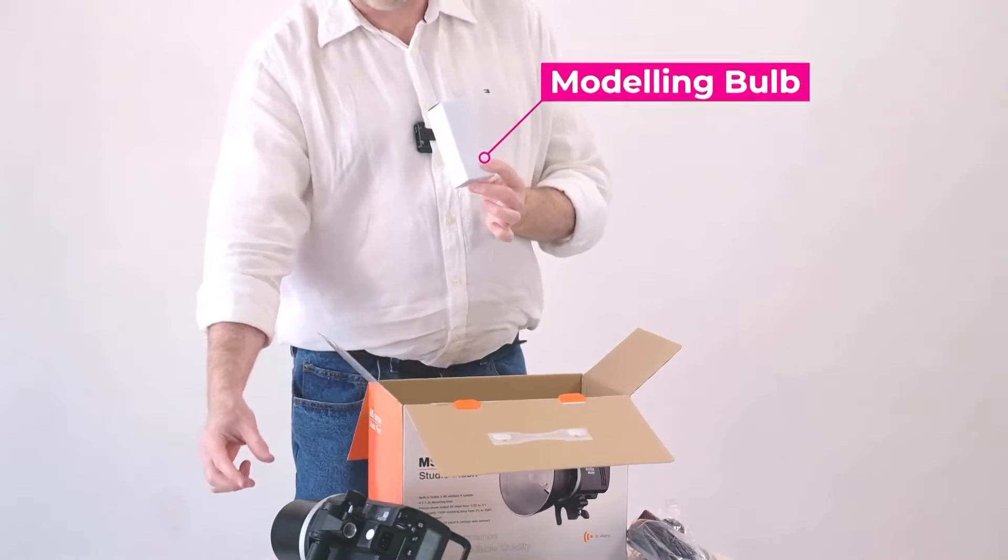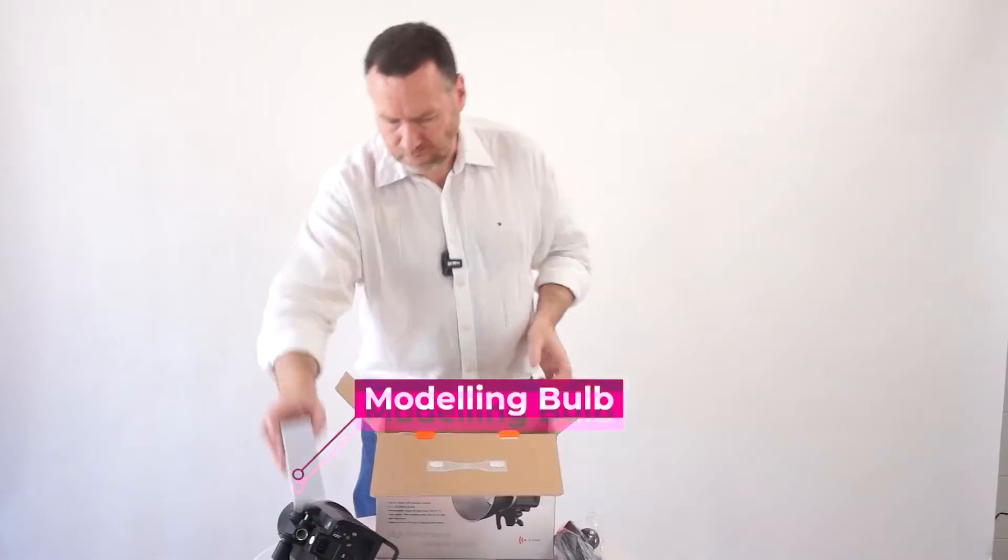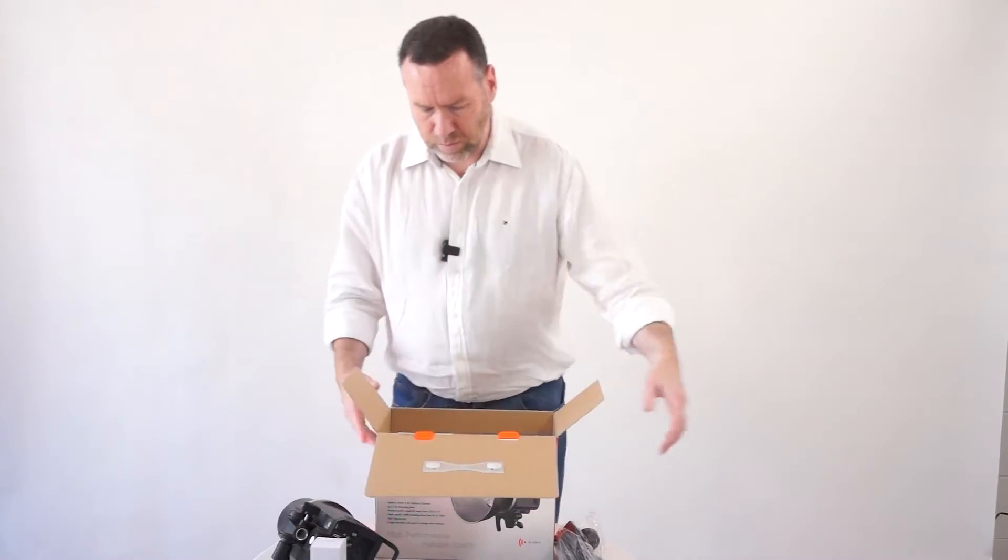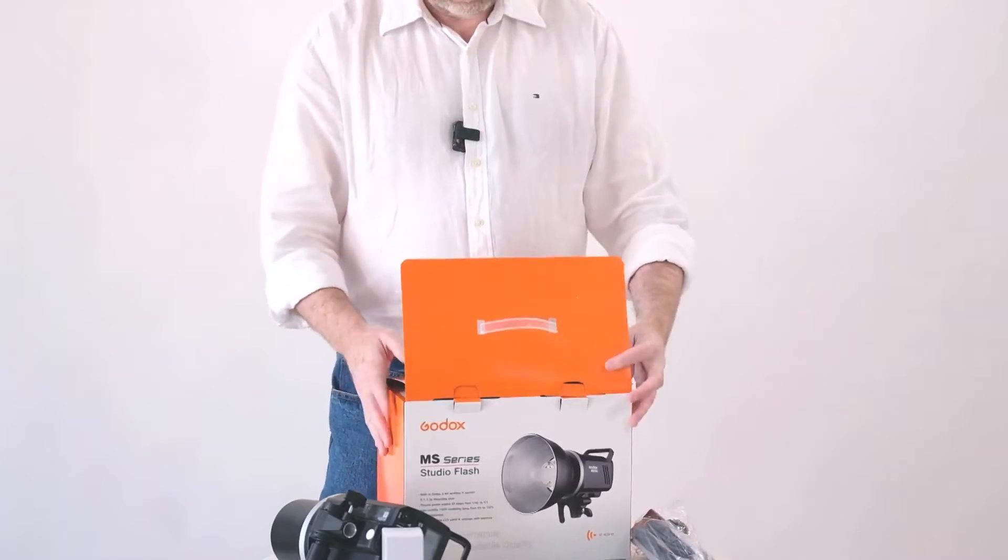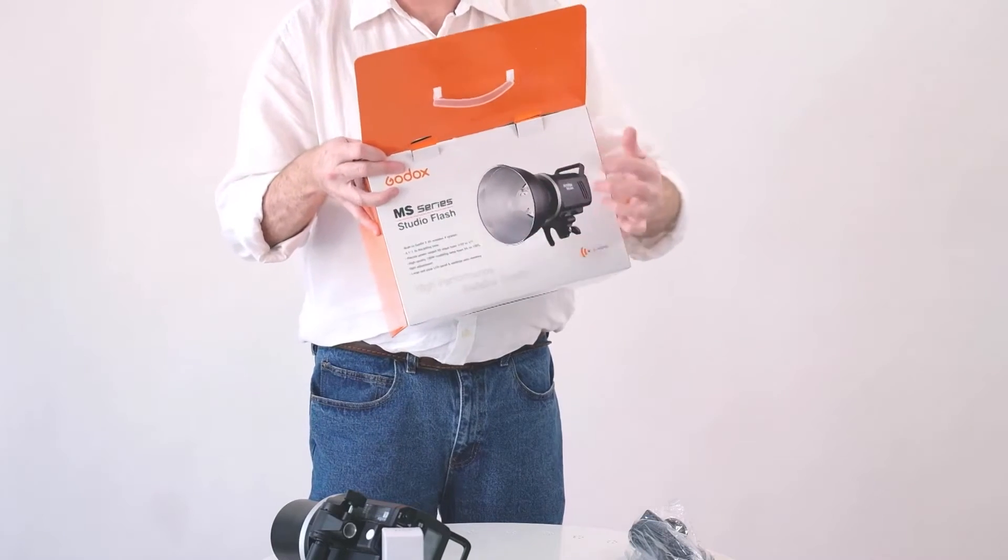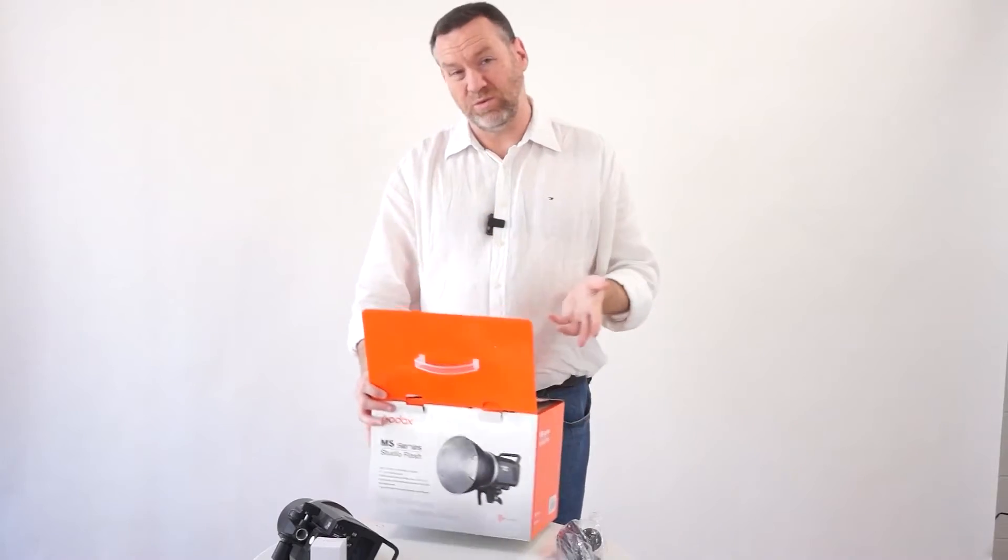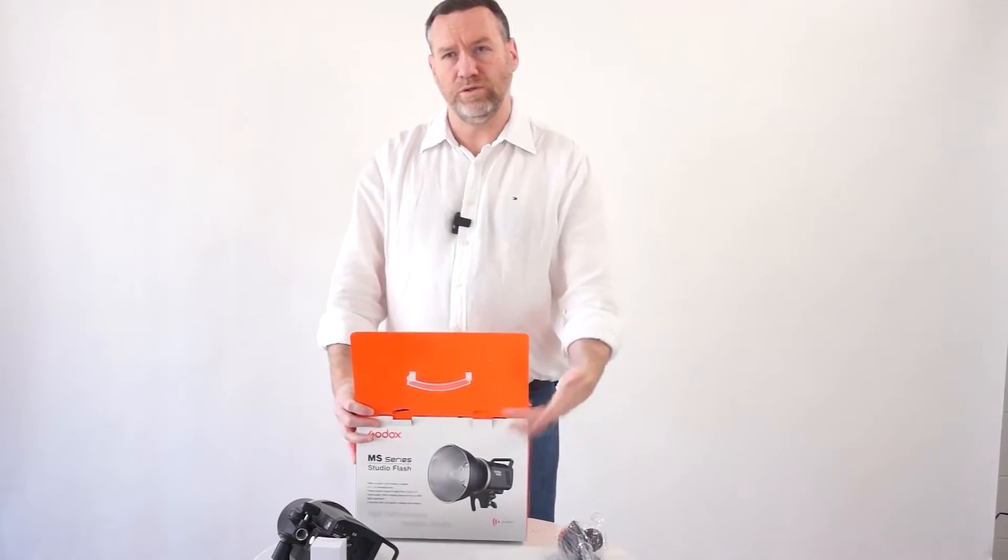The flash itself, the flash bulb is already in the unit. Now you'll note on the box of this is a reflector on the front of the flash and as you'll see there isn't actually one in the box so if you want one of those you'll need to buy that separately.